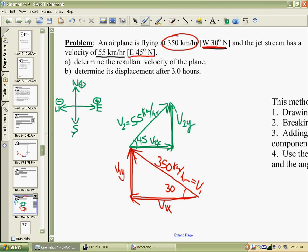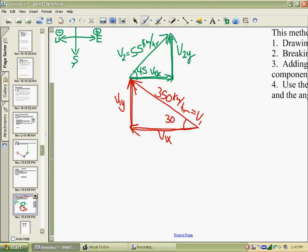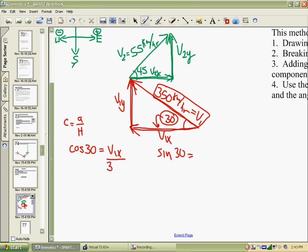To calculate each of those components, we need to rely on some trigonometry. Looking at the red triangle, we're going to use the angle of 30 degrees and the hypotenuse of 350. We're going to use those two numbers to figure out Vx and Vy by using the cosine of 30 and the sine of 30 degrees. Cosine of 30 is adjacent over hypotenuse. So the adjacent side to 30 is V1x, and the hypotenuse is 350. We can solve this to get V1x by itself. V1x is going to be 350 times the cosine of 30 degrees.